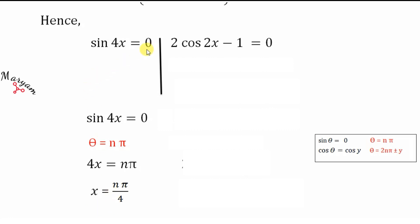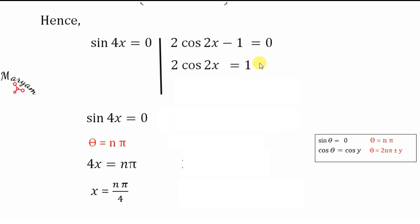Now we find the general solution of 2 cos 2x − 1 = 0. We rearrange: 2 cos 2x = 1, so cos 2x = 1/2.